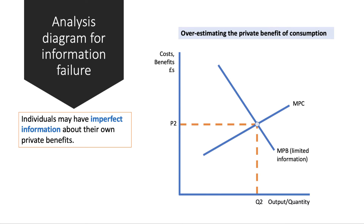Let's take an example of a consumer who might overestimate the private benefit of consumption. The marginal private benefit is the benefit to the individual consumer of consuming the next unit, and oftentimes people have imperfect information about their own private benefits — they suffer from an information gap.